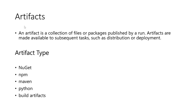Next is artifact. An artifact is a collection of files or packages published by a run. Artifacts are made available to subsequent tasks such as distribution or deployment. You can imagine a Maven package, a NuGet package, an npm package, or even a Python package. You write custom code, combine it into a module or package, and use that package in subsequent tasks in your pipeline. The different artifact types — NuGet, npm, Maven, Python — are very widely used in Azure Pipelines.